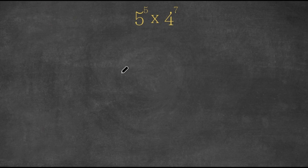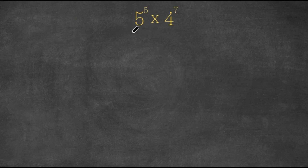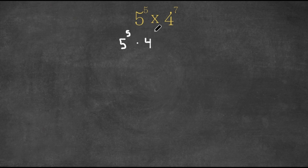Welcome back to Click Academics. In today's video I'm going to be teaching you guys how to solve this exponential problem without a calculator. So we have 5 to the power of 5 times 4 to the power of 7. What I'm first going to do is rewrite this as 5 to the power of 5 times 4 to the power of 5 plus 2.